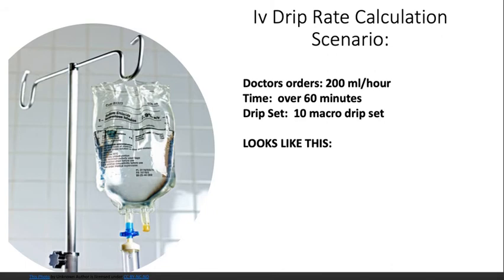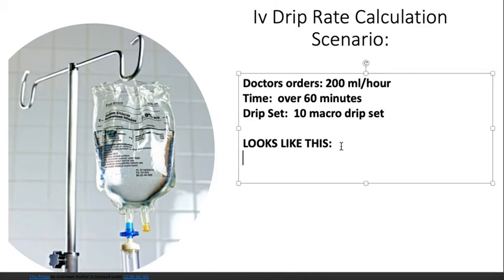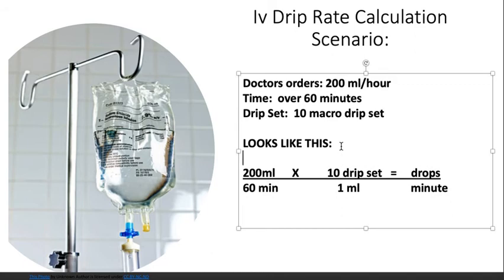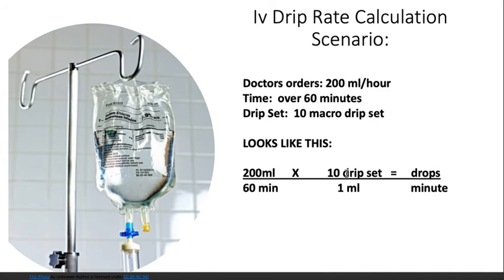Let's do another one. The scenario is 200 milliliters over an hour with a 10 macro drip set. Go ahead and pause the video, write the formula on a piece of paper. You should set it up as 200 milliliters over 60 minutes, multiplied by the drip set — 10 drips over 1 milliliter — to get drops per minute. Click pause, do the math, and then we'll go to the next slide.